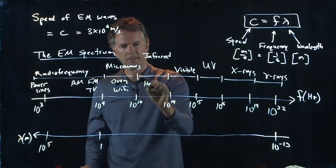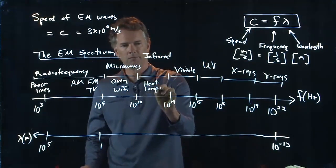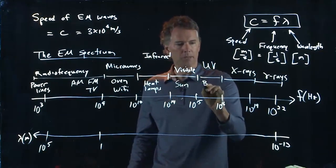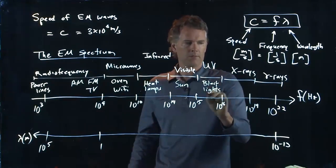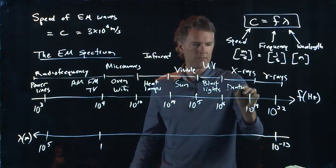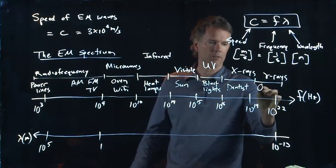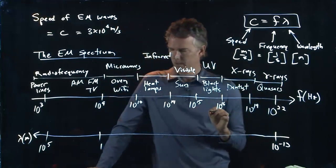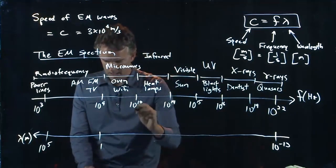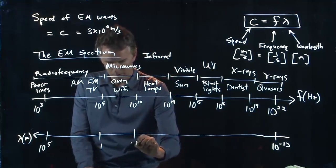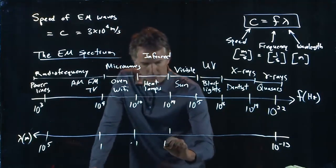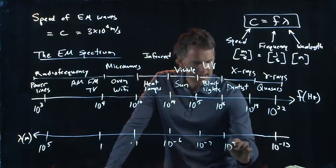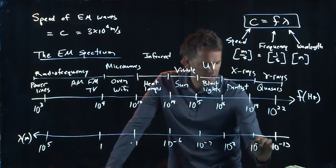Infrared, that's stuff like heat lamps. Visible is the sun. UV would be black lights. X-rays, you get when you go to the dentist. Gamma rays, you only get from objects like quasars. And on the scale here, 10 to the 10 corresponds to about 0.1, and then we get to 10 to the minus 6, and 10 to the minus 7, and 10 to the minus 8, and 10 to the minus 10, and so on.